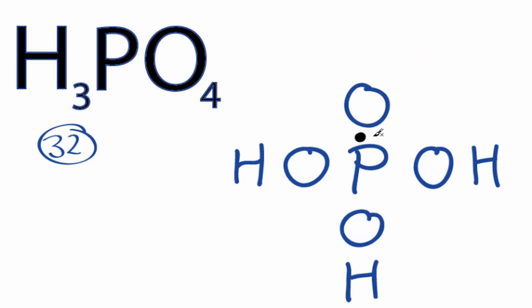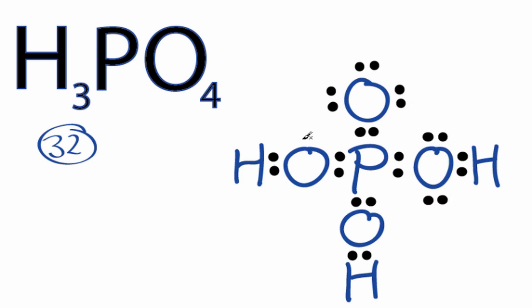We'll put 2 electrons between atoms to form chemical bonds. We've used 14, 16, 18, 20, 22, 24, 26, 28, 30, and 32.